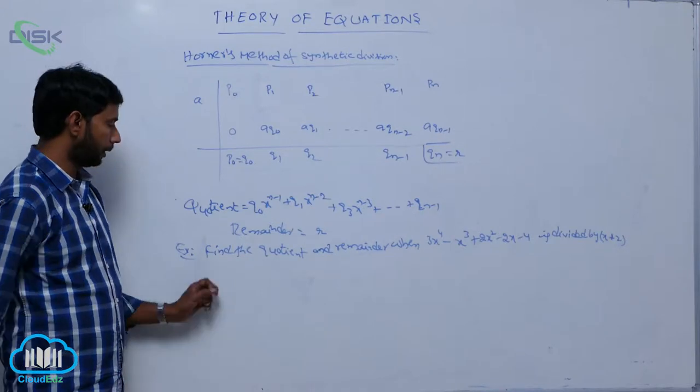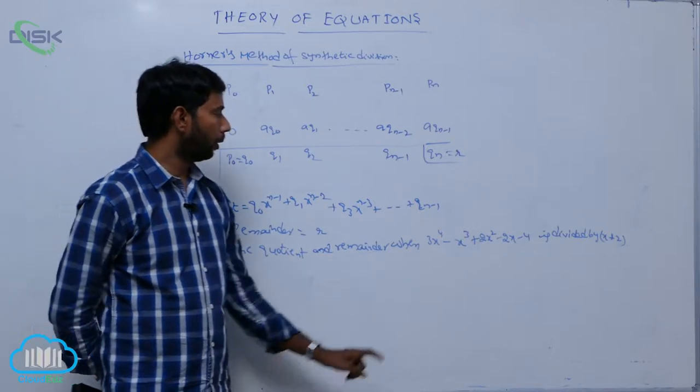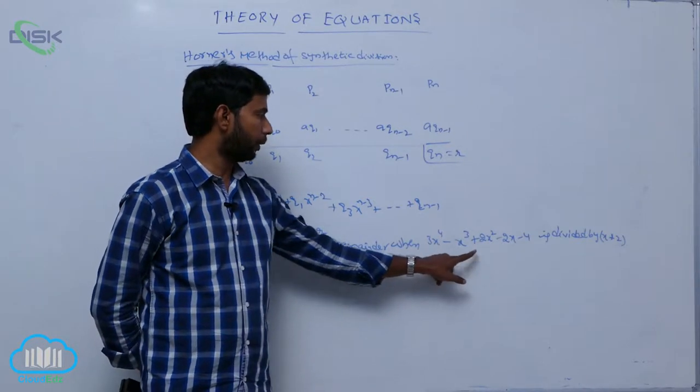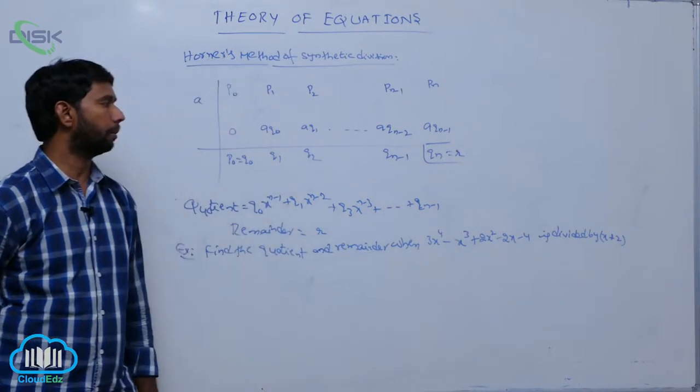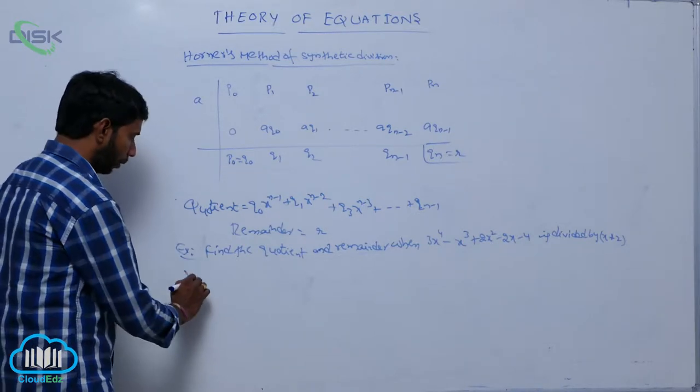An example about Horner's method: Find the quotient and remainder when the polynomial 3x^4 - x^3 + 2x^2 - 2x - 4 is divided by x + 2. First, write the coefficients.